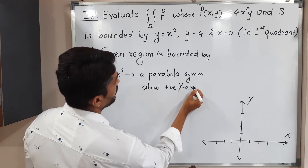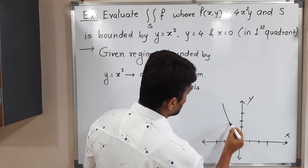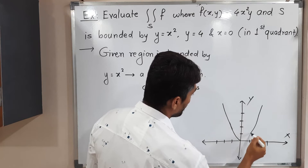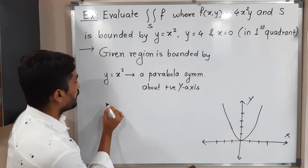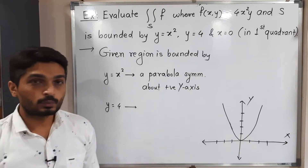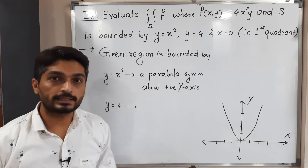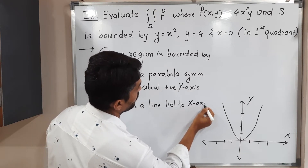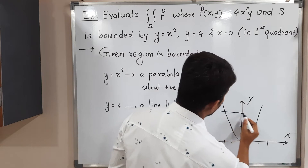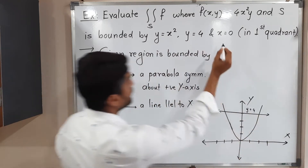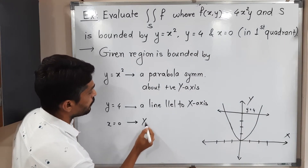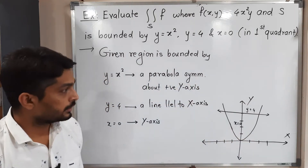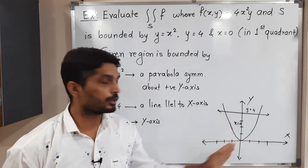I will draw a parabola symmetric about the positive y-axis. The second curve is y equals 4, which is an equation of a line parallel to the x-axis passing through y equals 4. I will draw that line here. The last boundary is x equals 0, which is the y-axis.